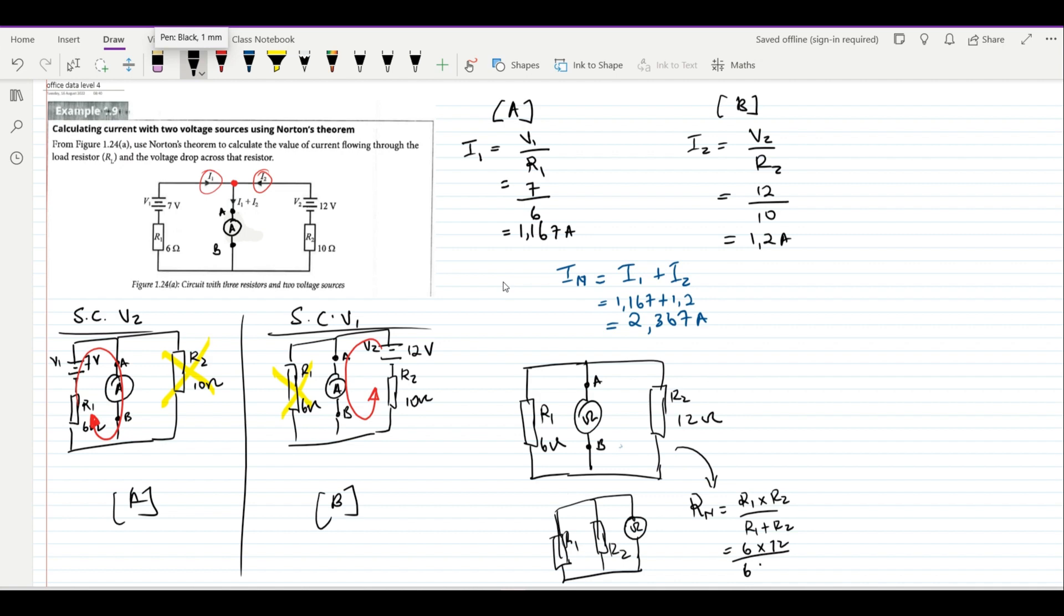And this is 6 times 10 divided by 6 plus 10, and the answer will be 3.75 ohms. That is your Norton resistance.